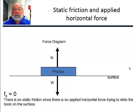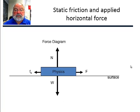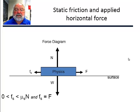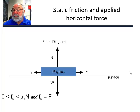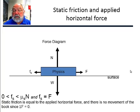If we push on the box a little bit, the static friction is less than the coefficient of static friction times the normal force. The static friction is equal to the force that's applied to the book. There's no movement in the book, so the sum of the forces equals zero.